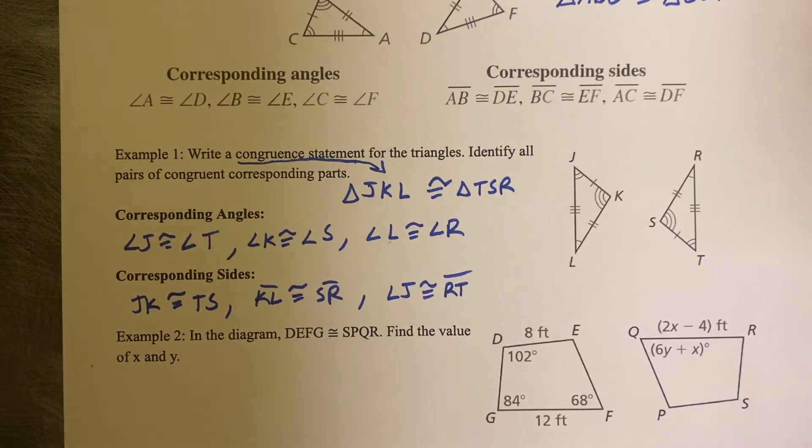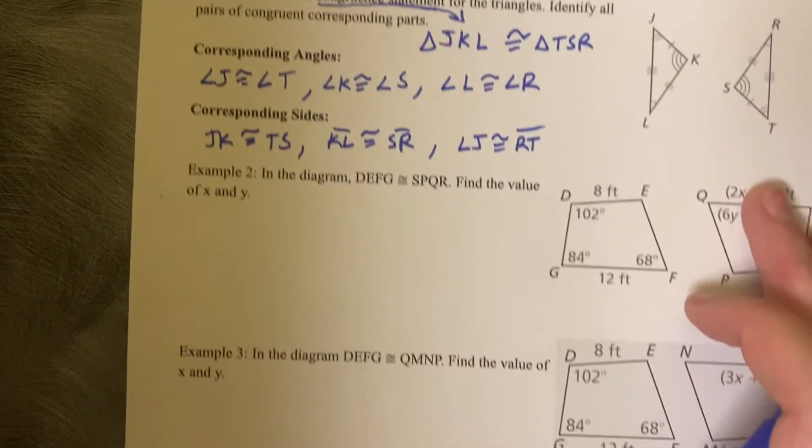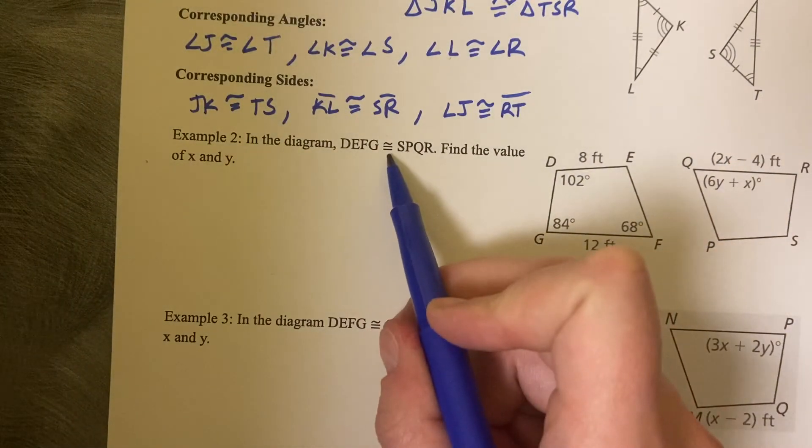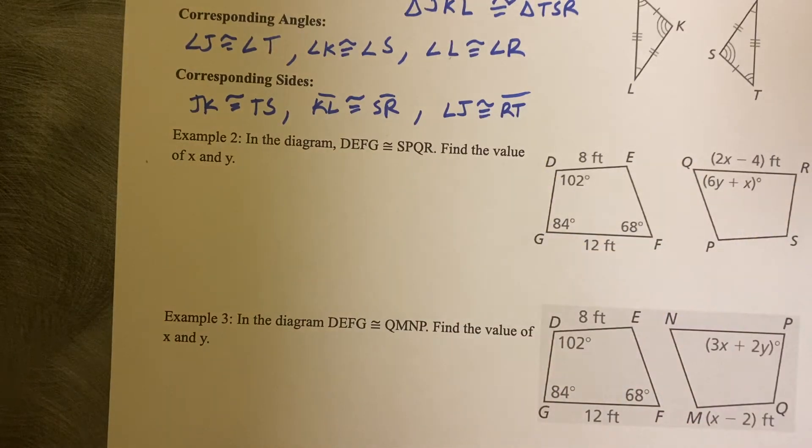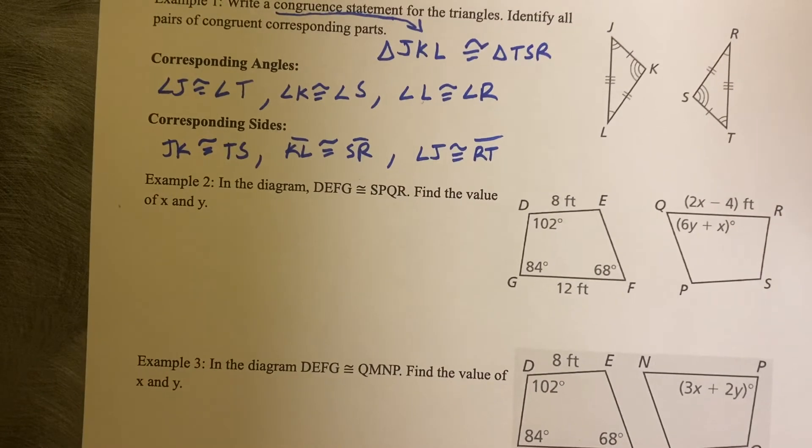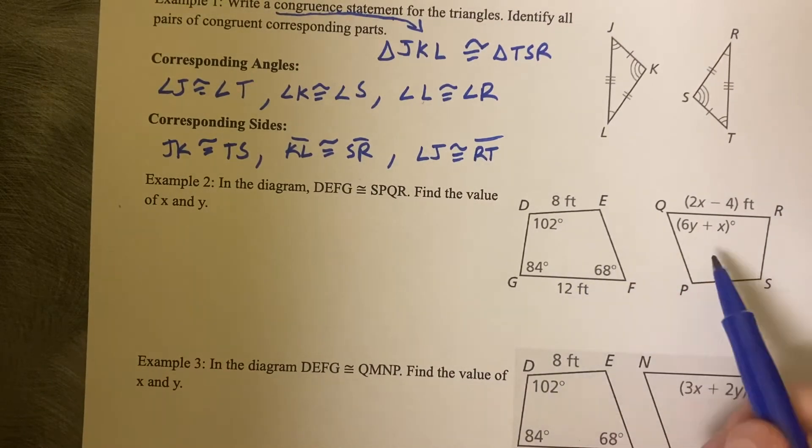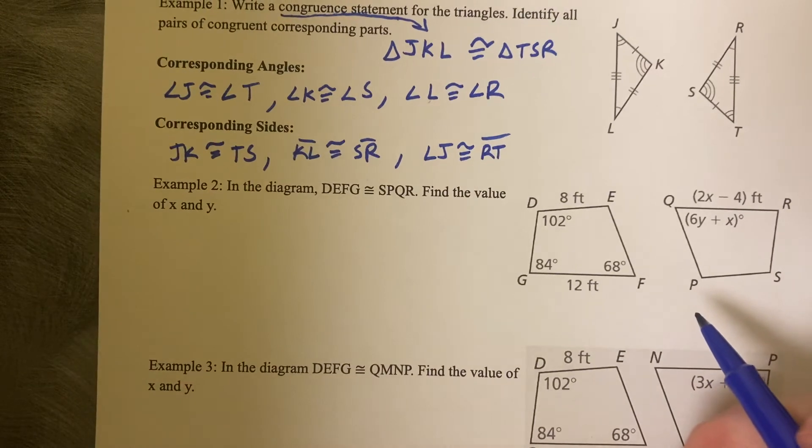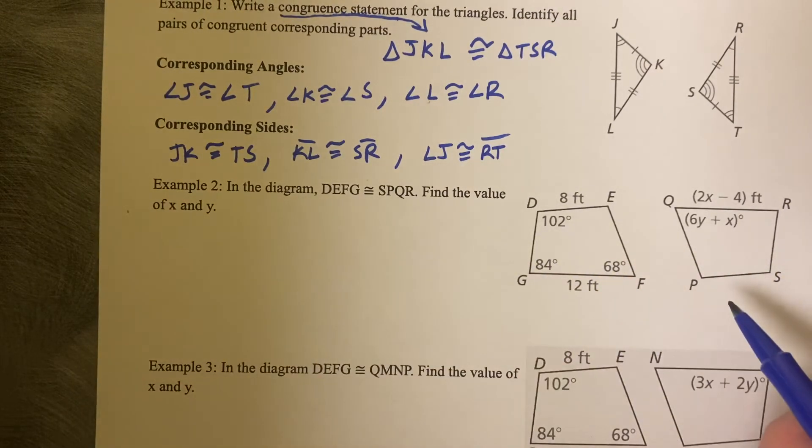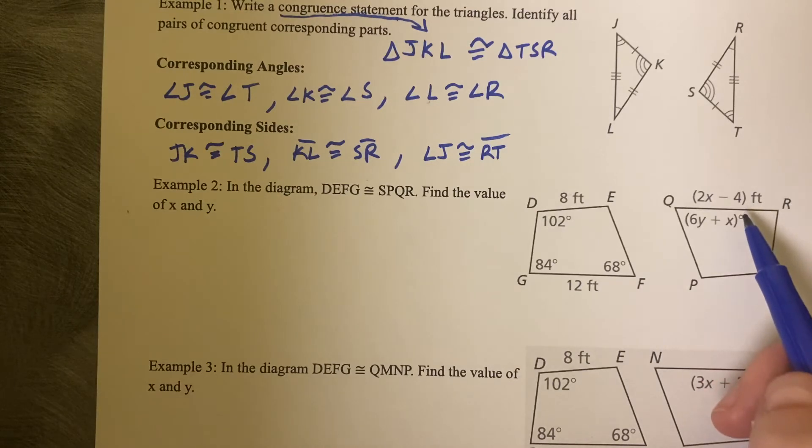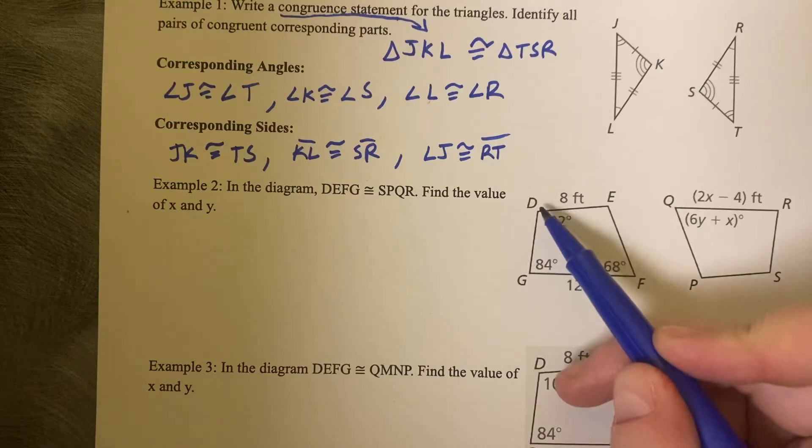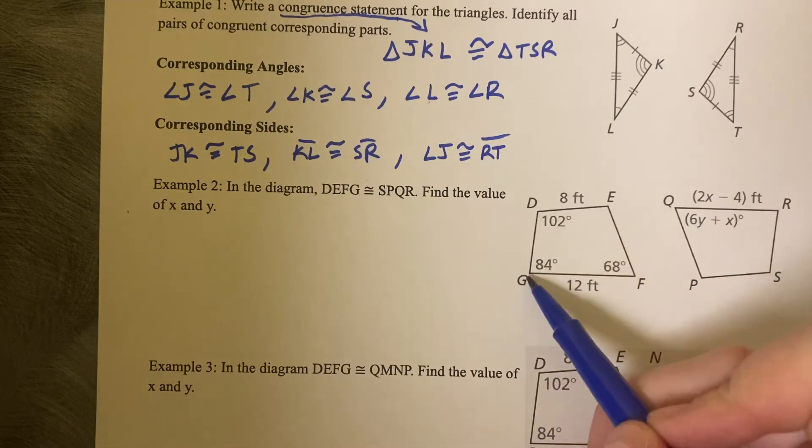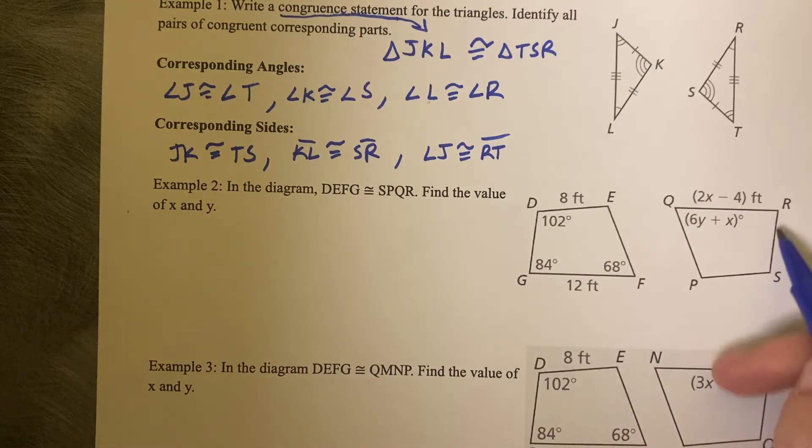Again, make sure you go in the right order. Order does matter when listing corresponding parts. Example number two, in the diagram, DEFG is congruent to SPQR. So they're saying that these two quadrilaterals are congruent. Find the value of X and Y. So first thing you need to do is figure out who matches with who. So usually I start with the smallest side and I match it up. So I can see that DG is congruent to SR.